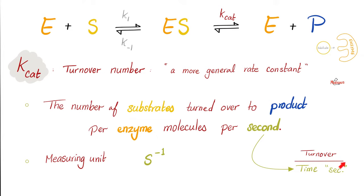If seconds is in the denominator, you can say second power negative one. What's the definition of K-cat? It's the catalytic constant. It's the number of substrate turned over, i.e. converted to products per enzyme molecule per second. That's why you can call it the turnover number.